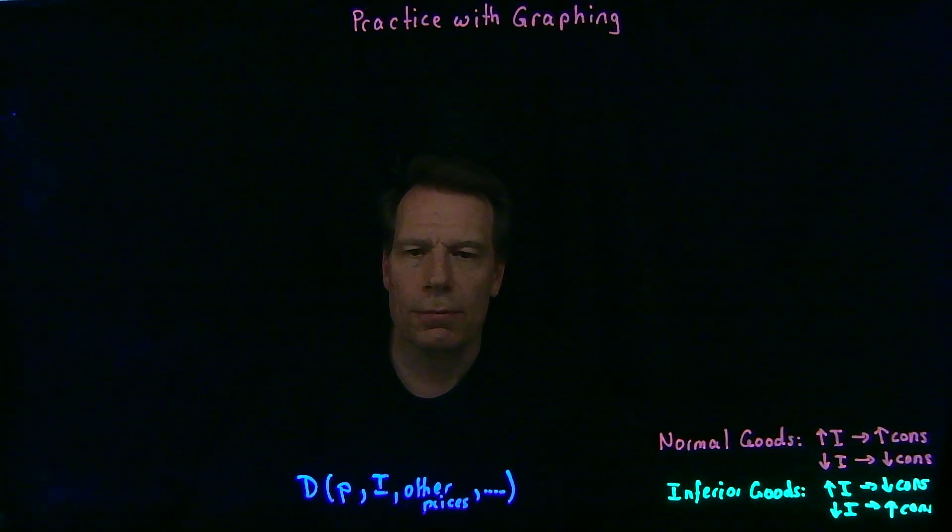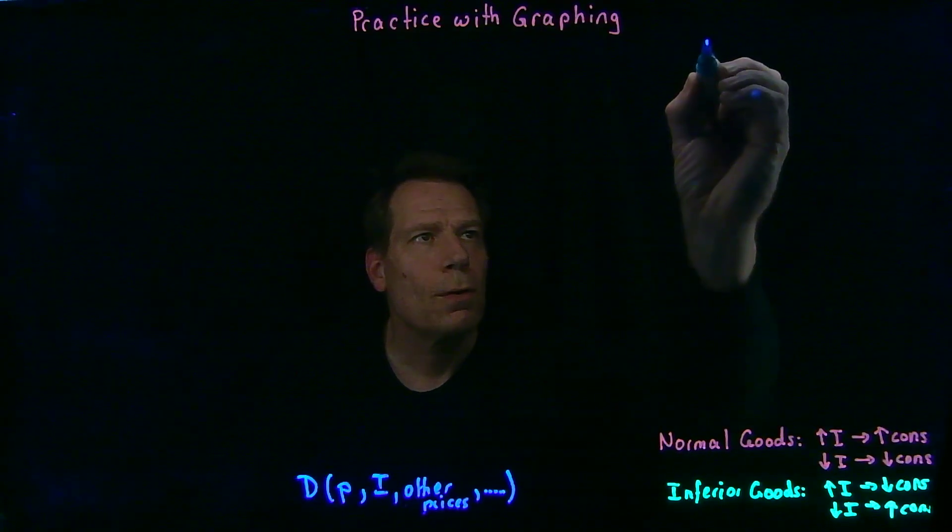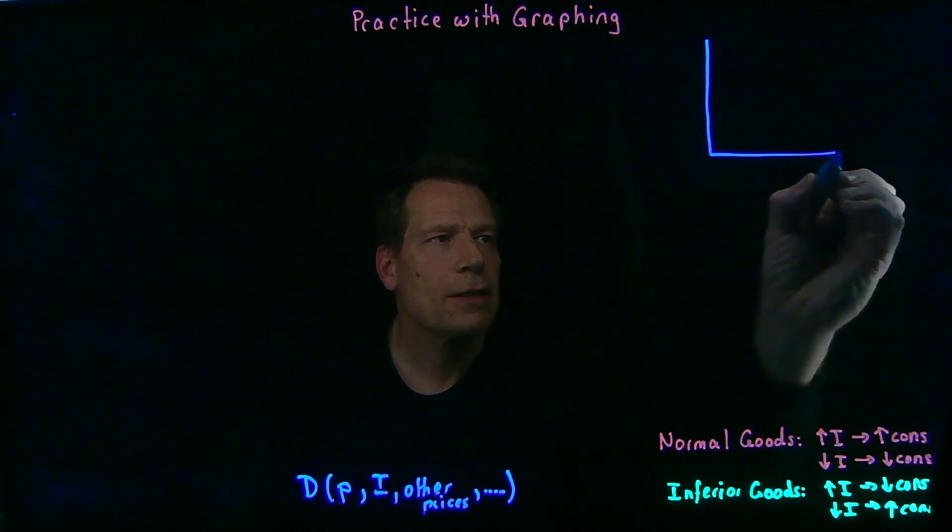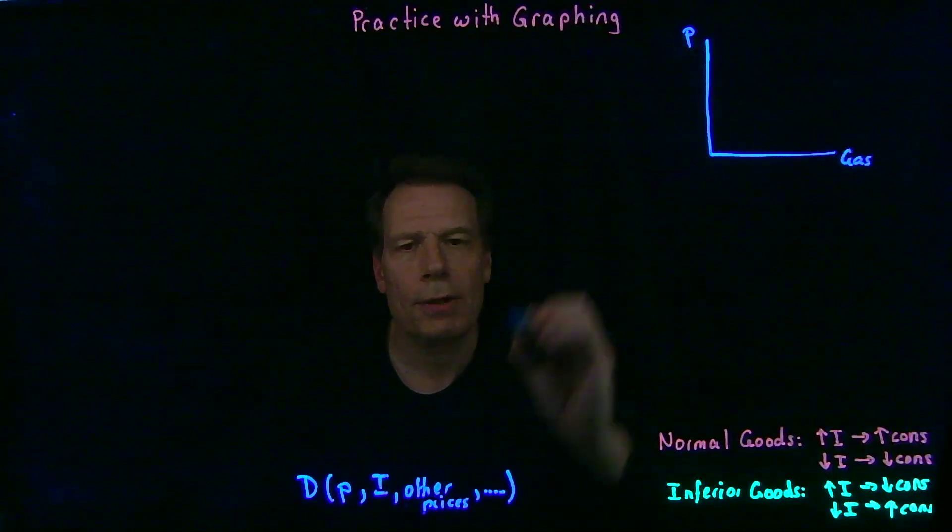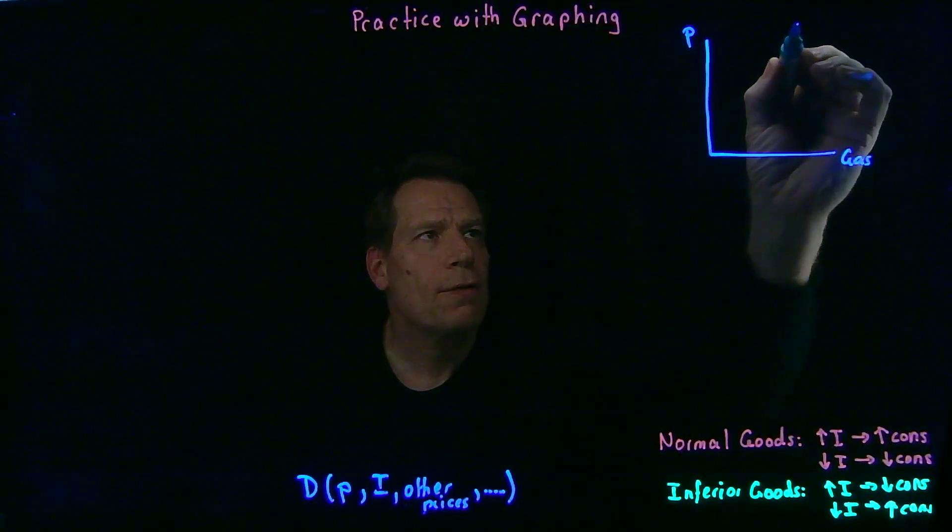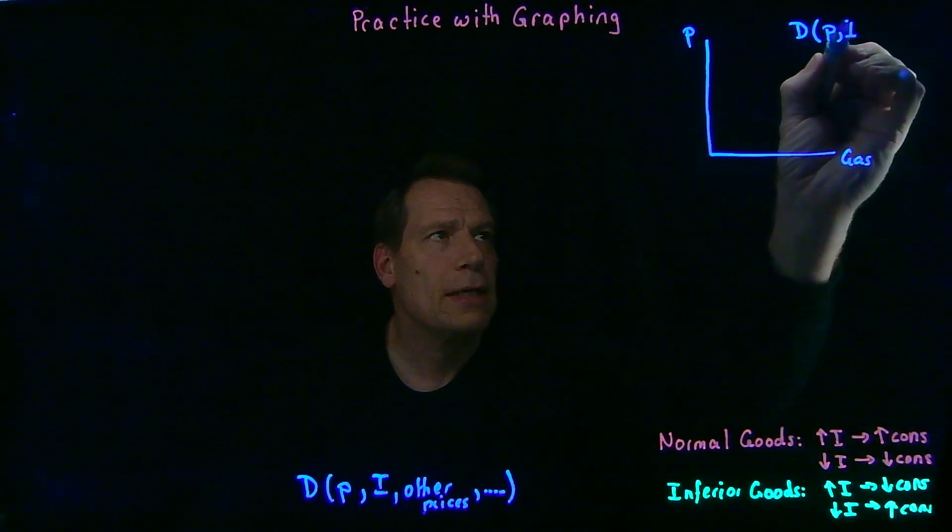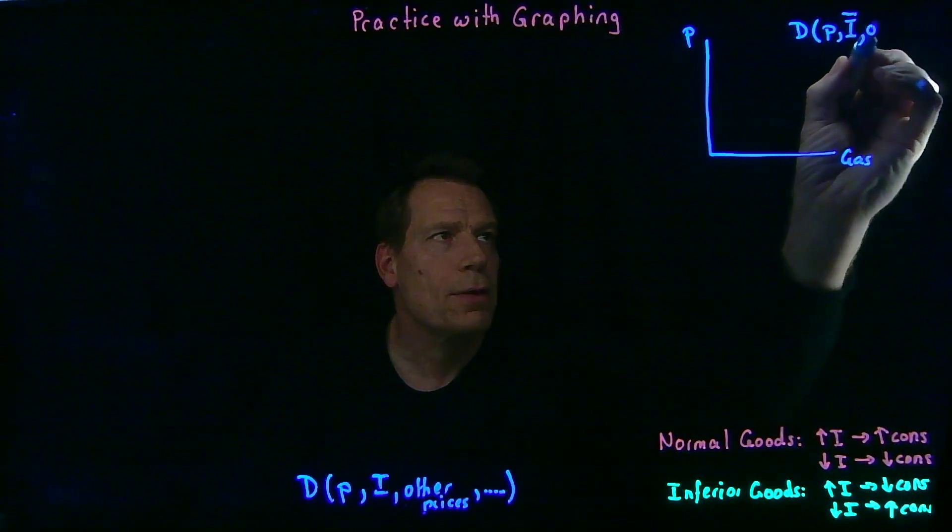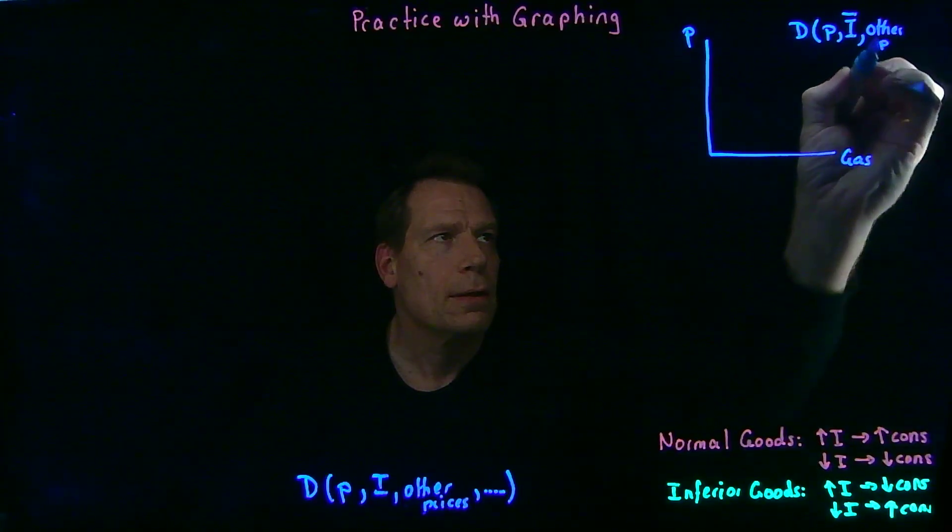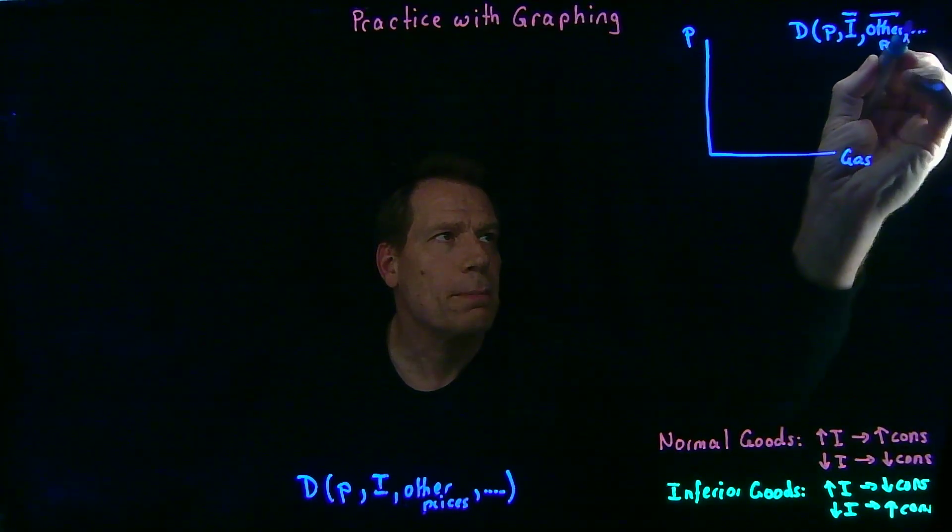So when we graph the demand curve, we graph the curve where we put the quantity of gasoline on the horizontal axis and the price of gasoline on the vertical. So we graphed the curve that told us the quantity that you demand as price changes, but we held income fixed, we held other prices fixed, and we held everything else that might matter fixed as well.